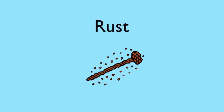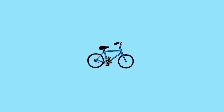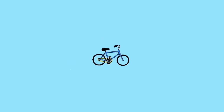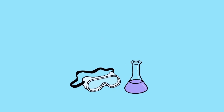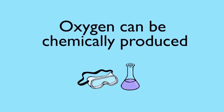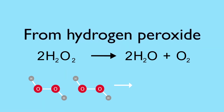There are ways of protecting iron from oxidation. Putting oil on your bike chain, for example, will protect it from the rust and keep it strong. Oxygen can also be produced in the lab by the chemical decomposition of hydrogen peroxide.